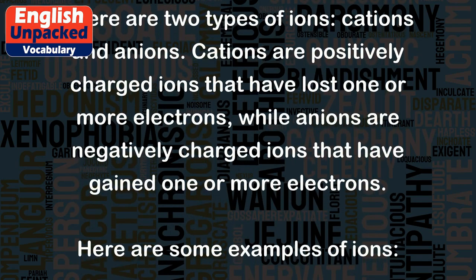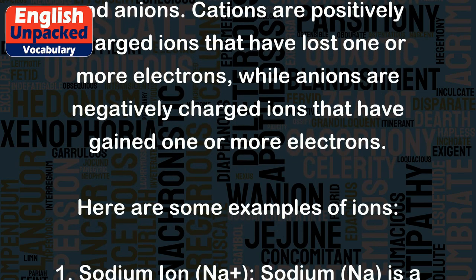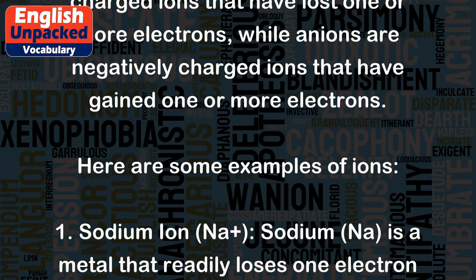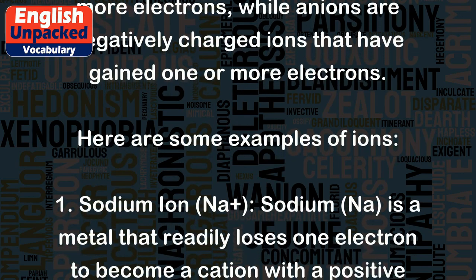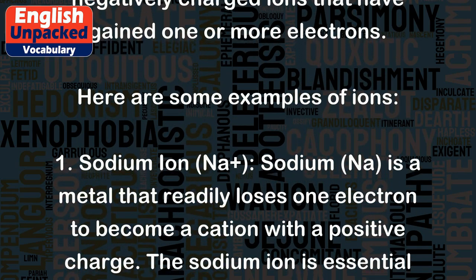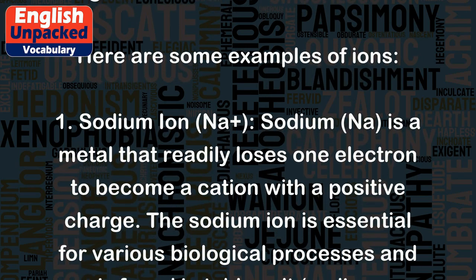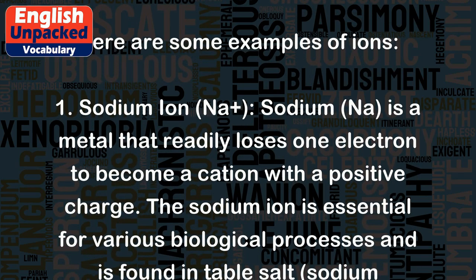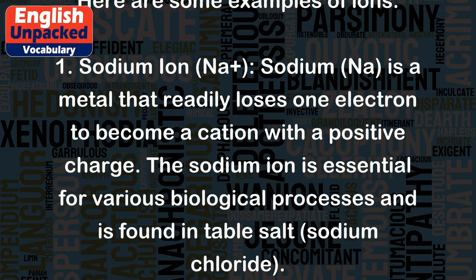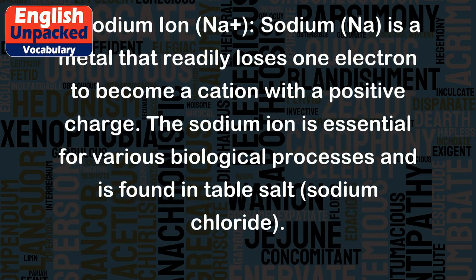Here are some examples of ions. 1. Sodium ion (Na+): Sodium is a metal that readily loses one electron to become a cation with a positive charge. The sodium ion is essential for various biological processes and is found in table salt, sodium chloride.